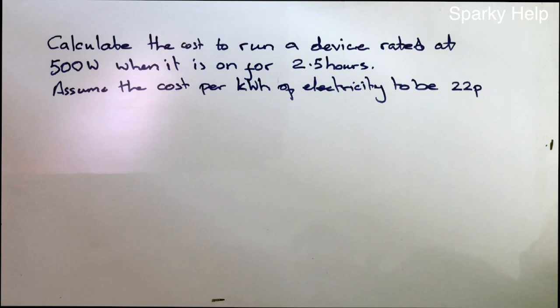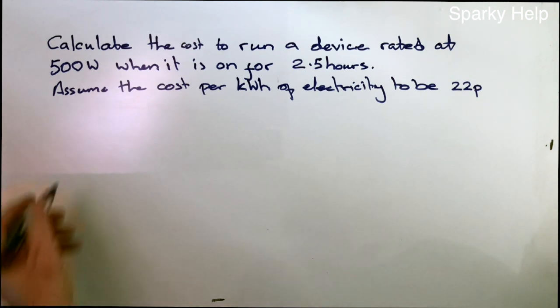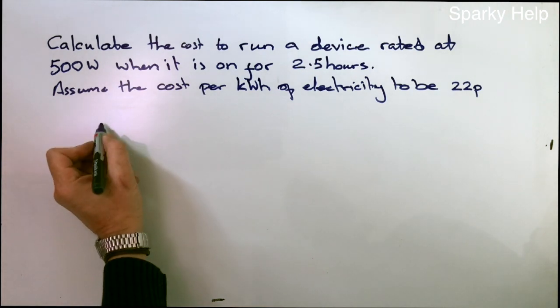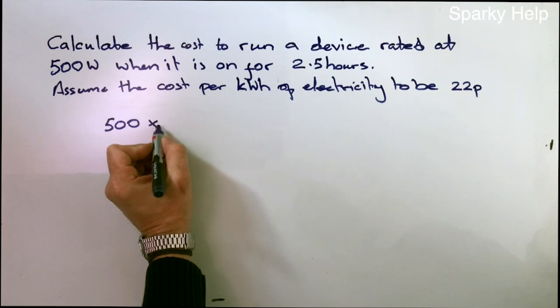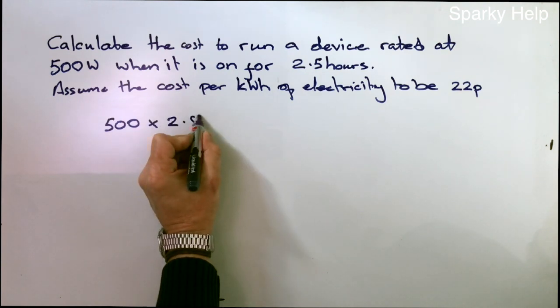Okay, here's a question. Calculate the cost to run a device rated at 500 watts when it is on for two and a half hours. Assume the cost per kilowatt hour of electricity to be 22 pence. So what do we do here? 500 watts times 2.5.